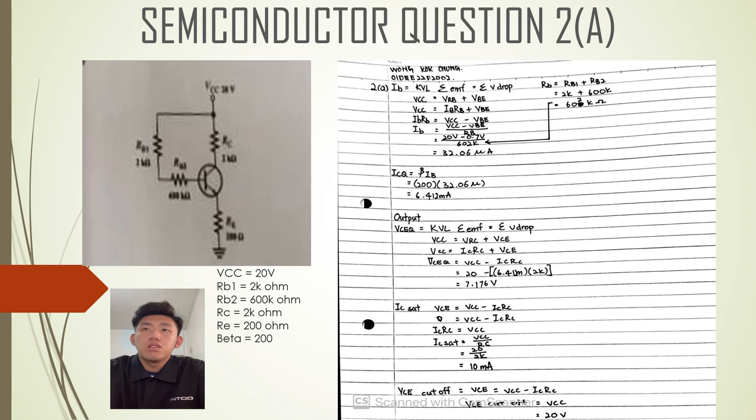The output is VCEQ. Using KVL, summation of EMF equals summation of voltage drop. VCC equals VRC plus VCE, so VCE equals VCC minus IC times RC, which equals 20 minus 6.4 milliampere times 2K, equals 7.176V.